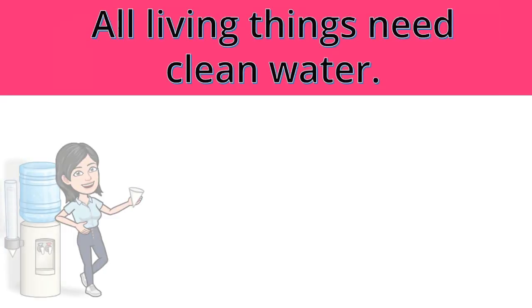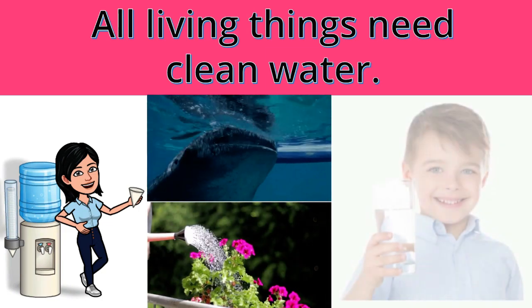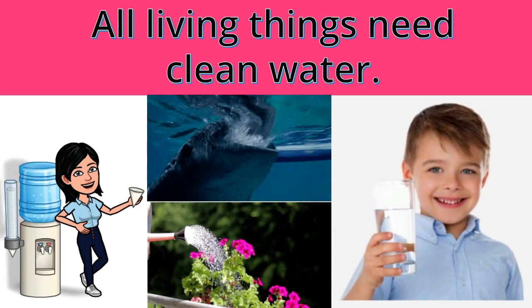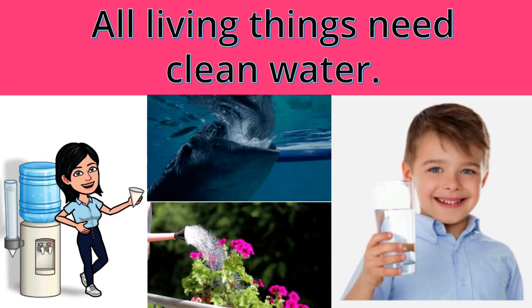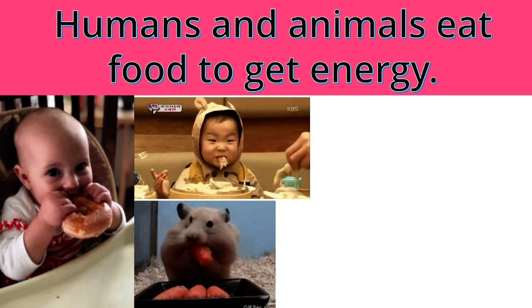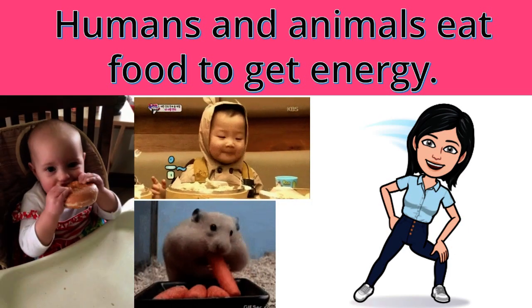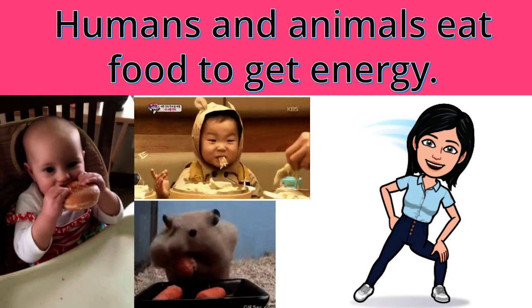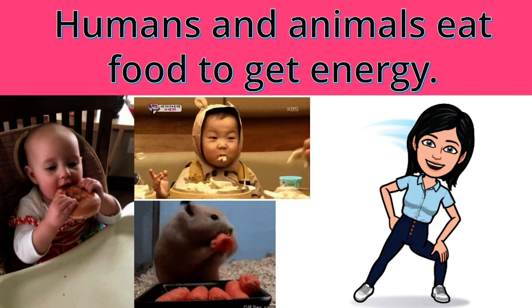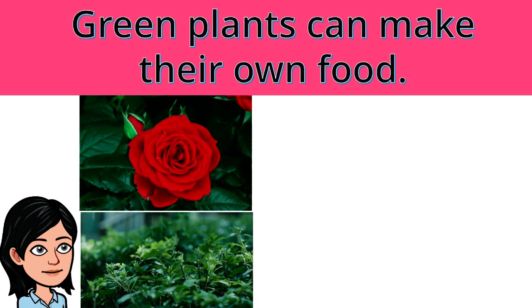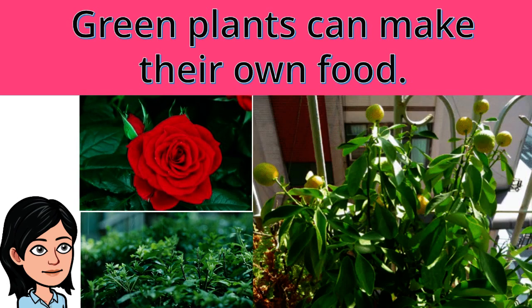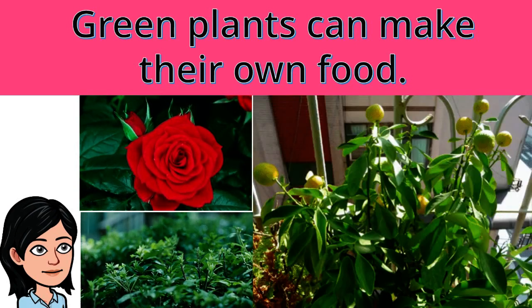All living things need clean water. Humans and animals eat food to get energy to carry out their activities. They cannot make their own food like plants. However, green plants can make their own food using carbon dioxide, water, and with the help of sunlight.